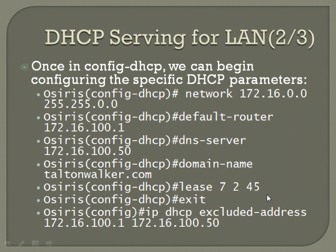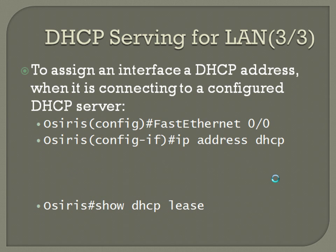To assign an interface a DHCP address — for example when an ISP is connecting to your router and giving you a dynamic address — first jump into the configuration of the interface, in this case FastEthernet 0/0. Then the command is simply 'ip address dhcp' instead of actually specifying an IP address.